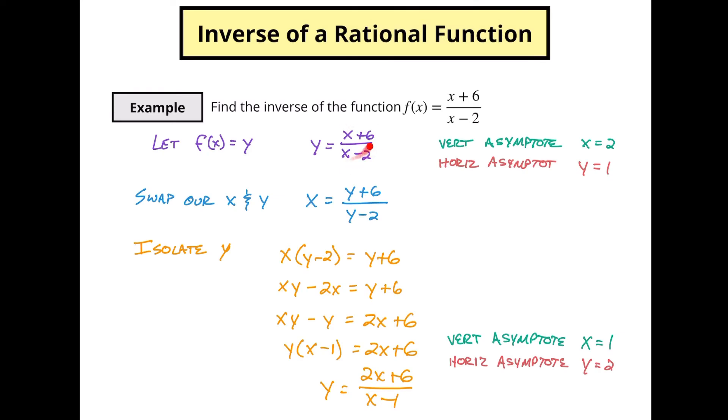Now one other thing you could do is drop in an x value into your original function and see if the inverse function produces the reversed values as well. Let's do that just to do a quick check to see that it's not just the asymptotes that have flipped. So I want to think about what x value is going to give me a nice clean y value because I don't want to make a lot of work for myself.